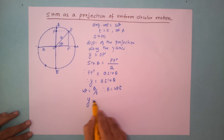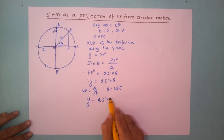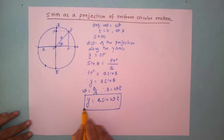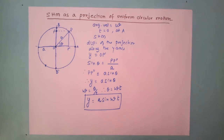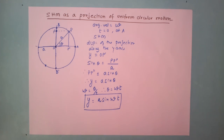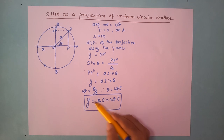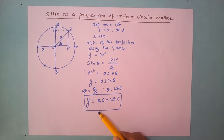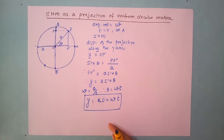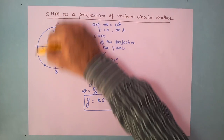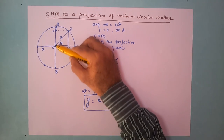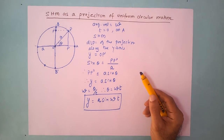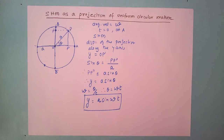The equation y = A sin(ωt) is the most fundamental equation of simple harmonic motion. It gives the displacement of the projection along the diameter of the circle, representing the motion of the projection — which is simple harmonic motion. This equation does not describe the motion of the object along the circular path, but rather the motion of its projection.